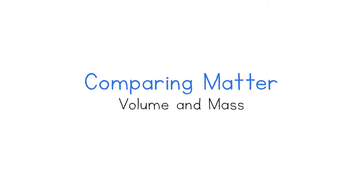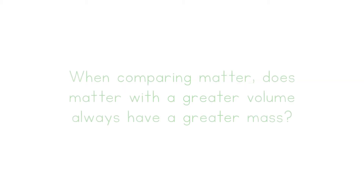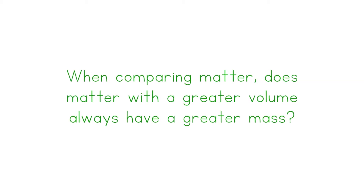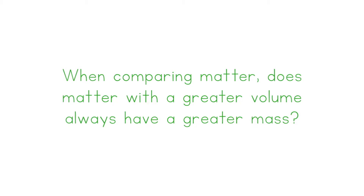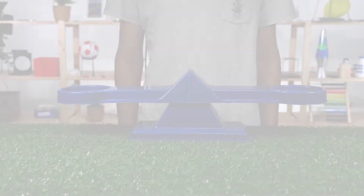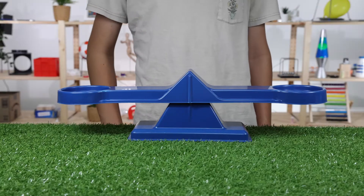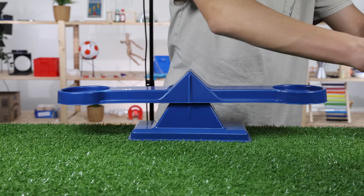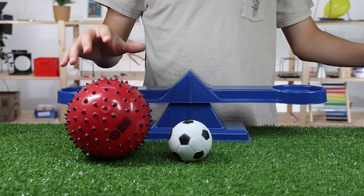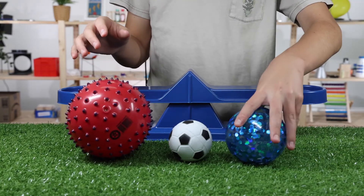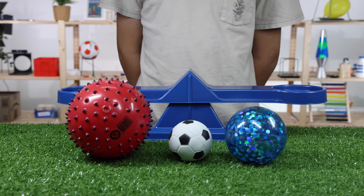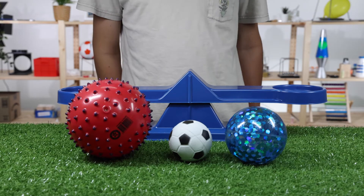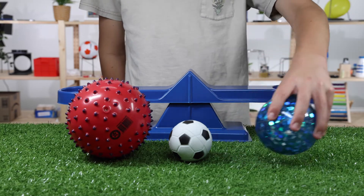Comparing Matter Volume and Mass. When comparing matter, does matter with a greater volume always have a greater mass? Here we have three balls of different sizes. Each ball takes up a different amount of space — they have different volumes. How do the balls compare in terms of mass?